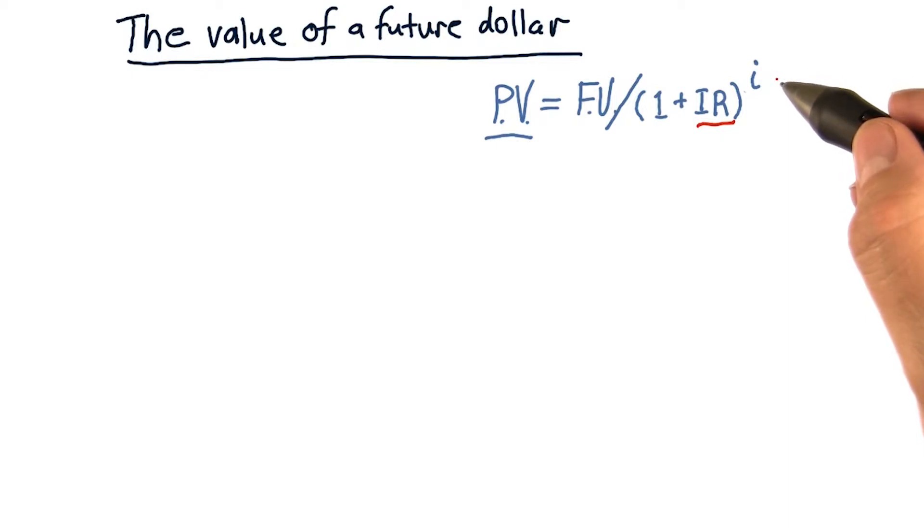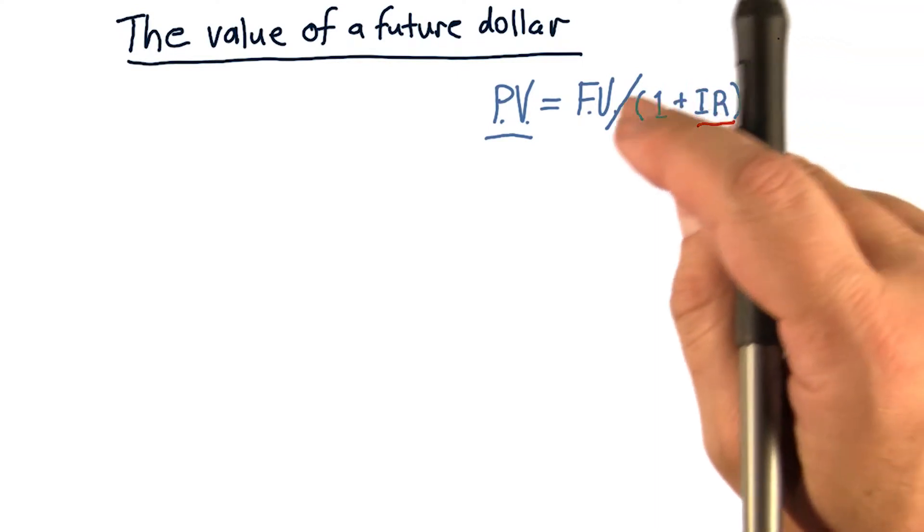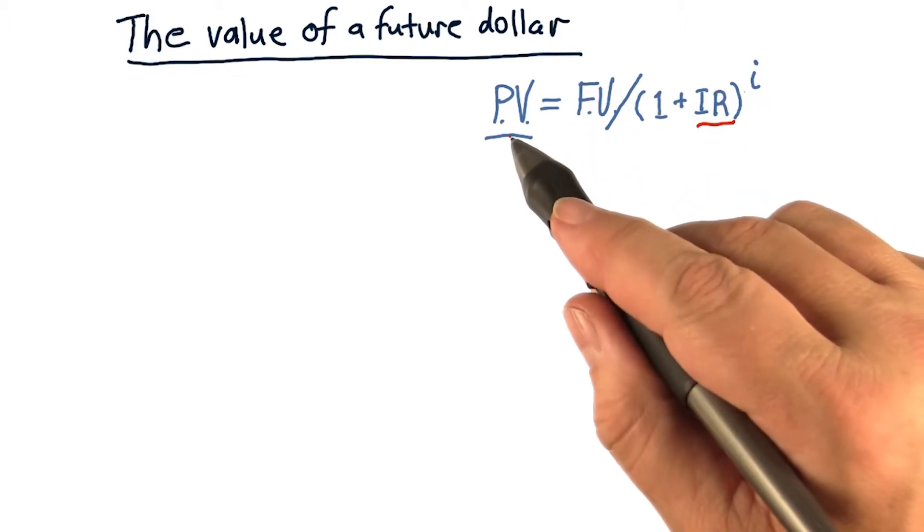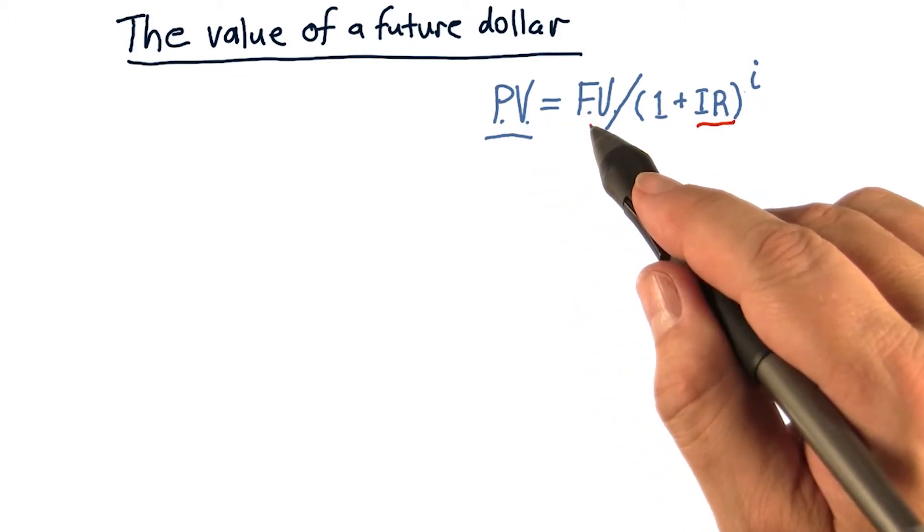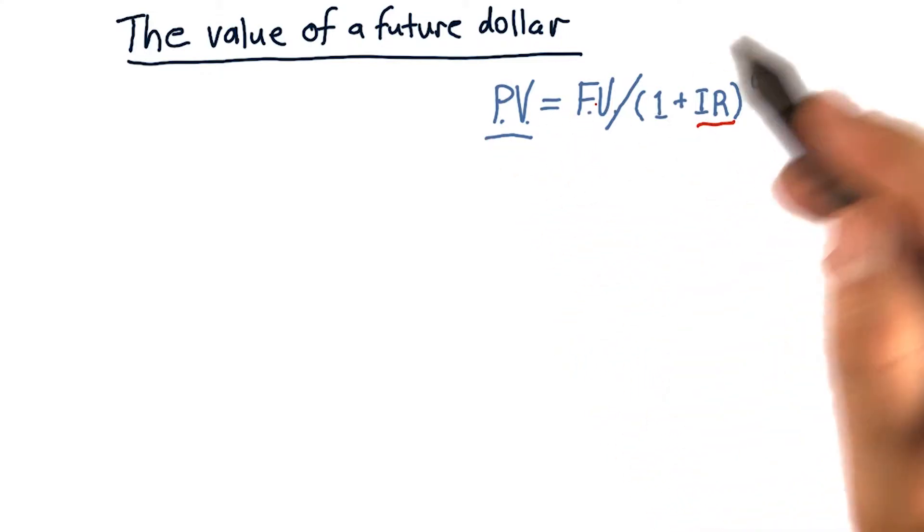So for instance, if it's going to be delivered right now, i is equal to 0. This whole component becomes 1, and present value is equal simply to future value. In other words, if we're going to pay a dollar, present value is worth $1.